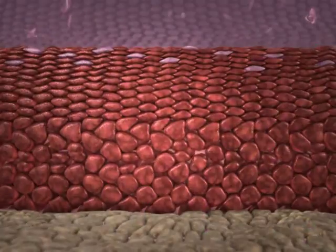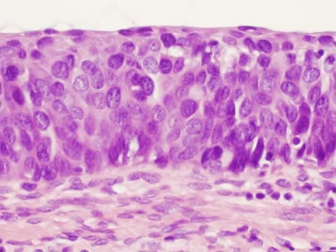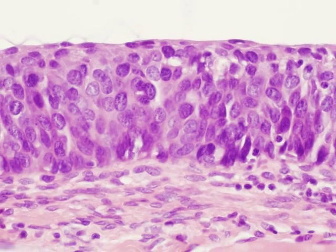CIN3 is characterized by neoplastic basaloid cells occupying more than two-thirds or the full thickness of the cervical epithelium.